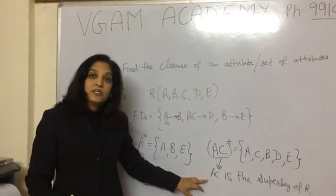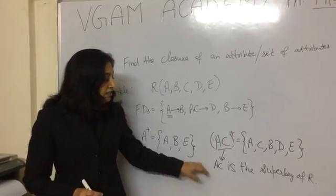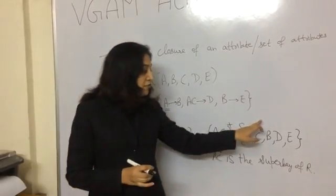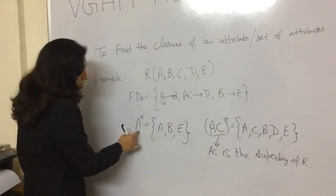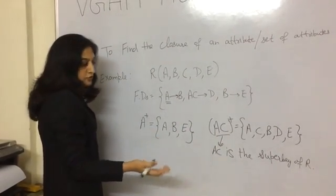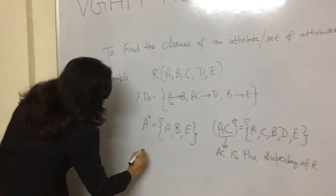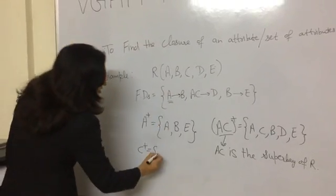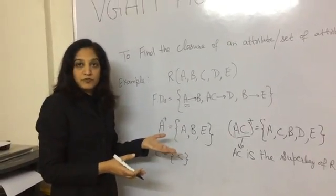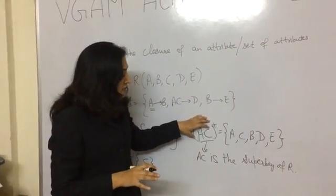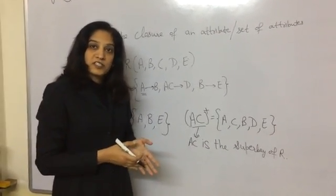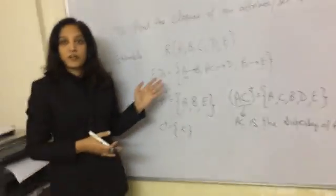To find out if it is the minimal candidate key or primary key of R, we need to verify that this super key is minimal — meaning if we remove any attribute from this super key, it won't identify all the attributes. For A, we already saw that A alone only identifies A, B, E, so we cannot remove C. If we find the closure of C, it will contain only C. So separately, neither A nor C can uniquely identify all the attributes of R. Together, AC can identify all the attributes of R. So AC is the super key and also the minimal candidate key — we can say it is the primary key of the relation R. This is the way to find the primary key of the relation R. Thank you.